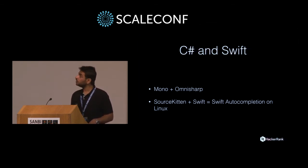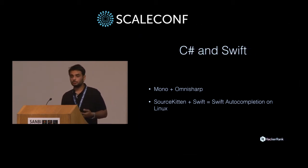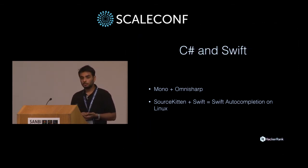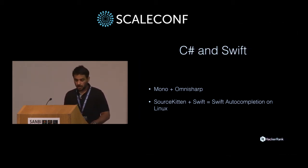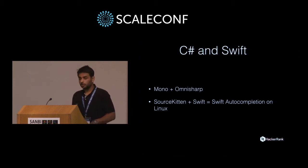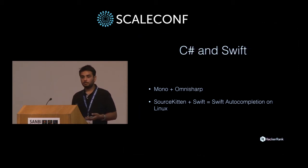For C# and Swift: we have lots of users on C#, and Swift is also being requested. C# uses Mono with OmniSharp on top to get code completion. It's somewhat slow, but it works because OmniSharp has an HTTP wrapper you can call to get completions. For Swift, we use SourceKit and source-kitten — SourceKit is the language framework for Swift, and source-kitten is the command-line parser for SourceKit.